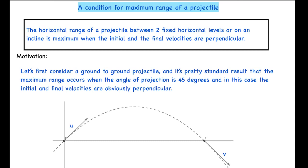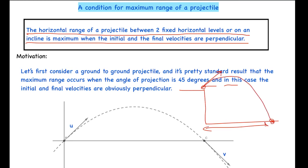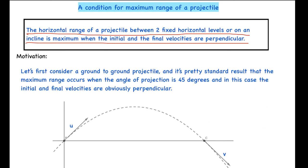So first let's look at the property: the horizontal range of a projectile between two fixed horizontal levels or on an incline is maximum when the initial and final velocities are perpendicular. Basically, if a particle is projected at some angle from a horizontal and lands at some point, the horizontal range — the distance along the x-axis travelled — is maximum when the final velocity is perpendicular to the initial velocity.